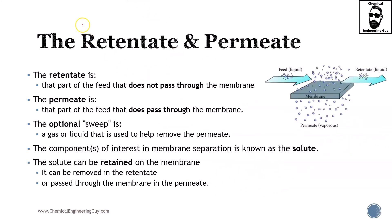I actually prefer to use this notation: the retentate is that part of the feed that does not pass through the membrane. So essentially the retentate is always the leftover, or the original solution without the permeate. The permeate is that part of the feed that actually passes through the membrane, or permeates. The name implies it — the permeate is that material that actually permeated through.